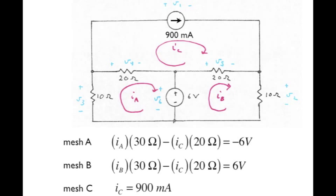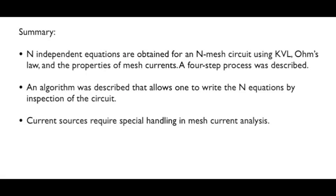Other methods are source transformations and supermeshes, but those are not going to be discussed in this lesson. We will end the lesson with that example. We described a method for writing mesh current equations via a four-step process. Kirchhoff's voltage law, Ohm's law, and the property of mesh currents were used toward that purpose. We did a three-mesh example circuit, but the methodology is valid for any number of meshes. Also, by noting a pattern of the equations, we described an algorithm that allows one to write those equations more efficiently by inspection directly from the circuit. We also noted that current sources do require some special handling in mesh current analysis, and one such method was demonstrated. Thank you very much for watching the lesson.